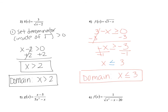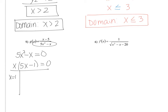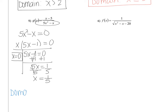Let's try number 5. Number 5 is an example of a fraction, so it can be everything but the values that make the bottom undefined. We set the denominator equal to 0 and solve. Factor out a GCF of x, leaving x times (5x minus 1) equal to 0. Set each piece equal to 0: x equals 0, and for 5x minus 1 equals 0, add 1 and divide by 5 to get x equals one-fifth. So the domain is all real numbers except when x equals 0 and x equals one-fifth, since those make the denominator undefined.